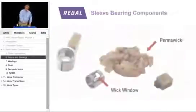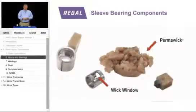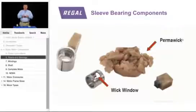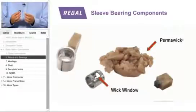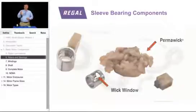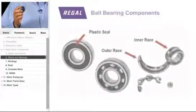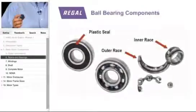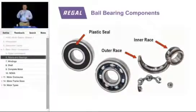We use two types of bearing systems in HVACR motors. Sleeve bearing components have a wicking material that puts a thin sheet of oil on the shaft to allow the motor to turn. Or a ball bearing motor — we use these when there are more radial or axial loads against the shaft that help the motor turn without binding up.